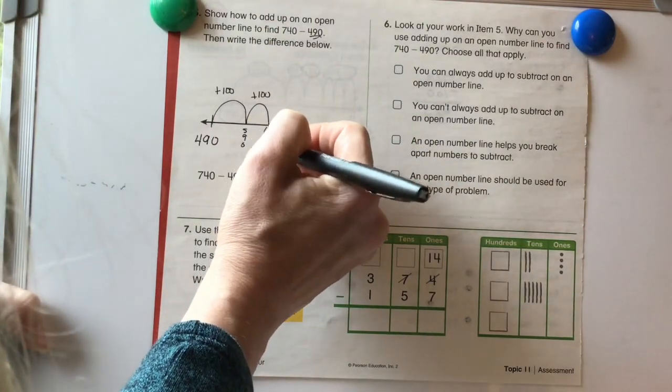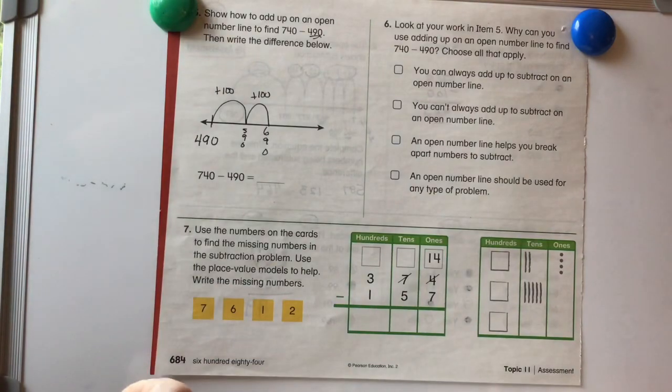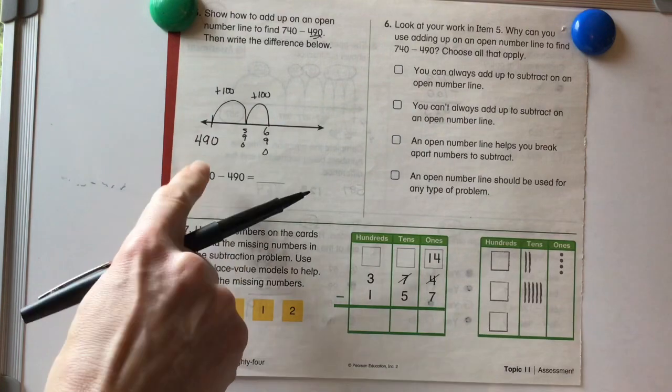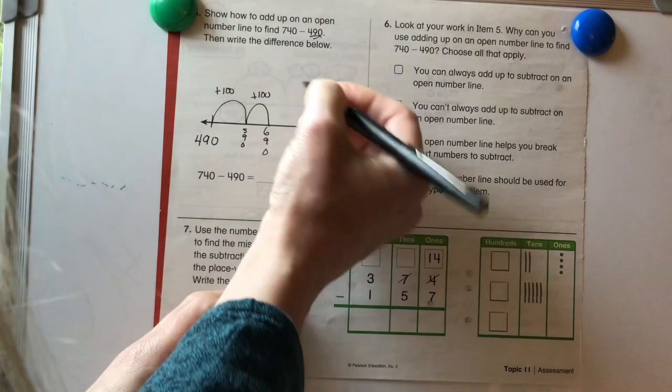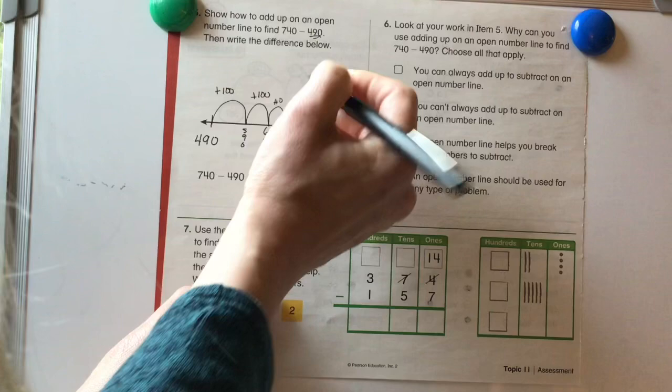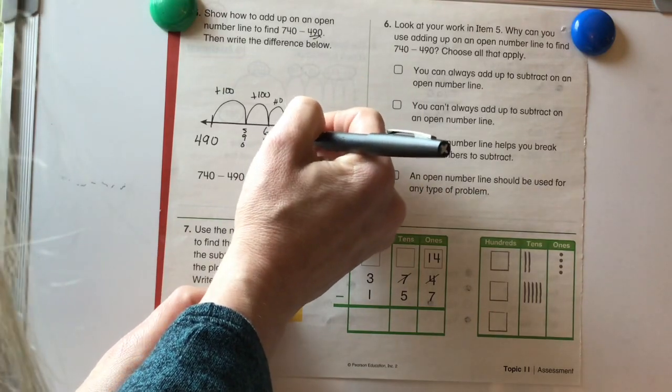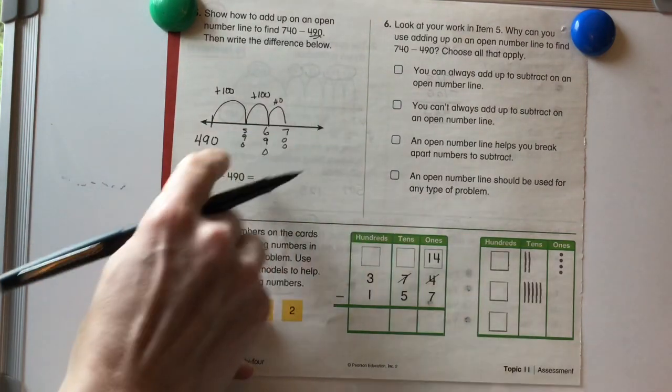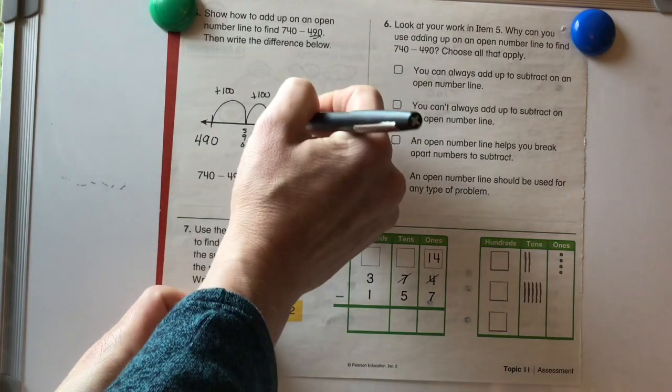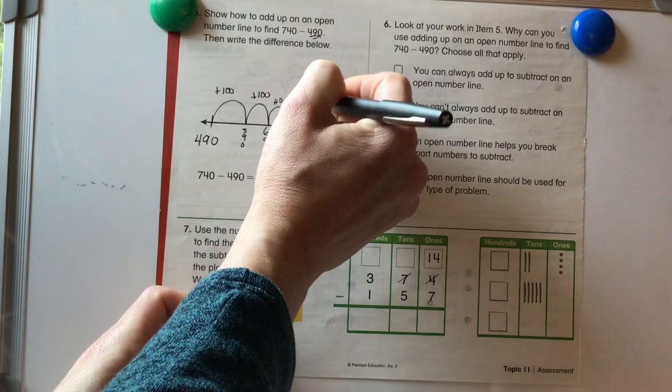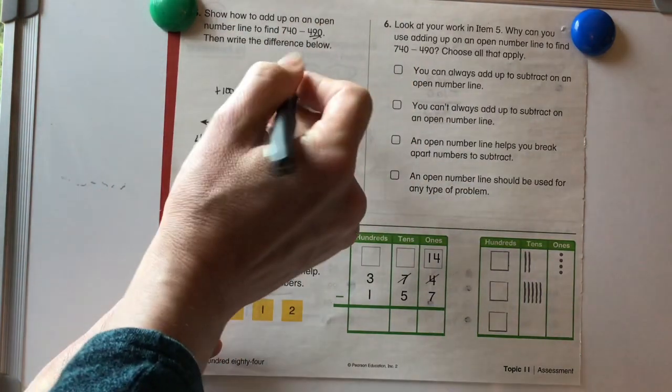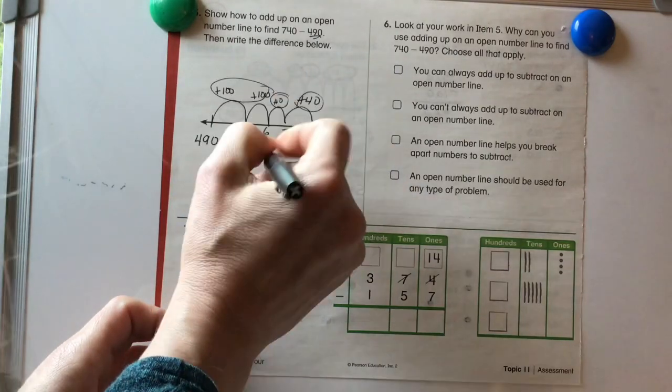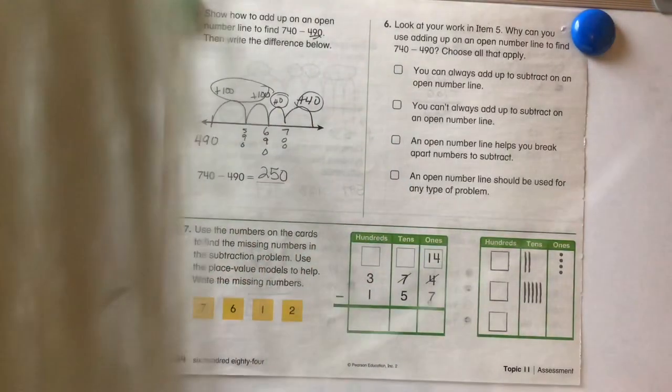That gets us to 690. We can't add another 100 because that would be too much. But let's start going by 10s because we need to get to 740. So 690 plus 10 is 700. And then if I just take a look at this, I can tell that 700 plus 40 is going to be 740. So I'm just going to go ahead and add these. 200 plus 10 plus 40 is going to be 250.